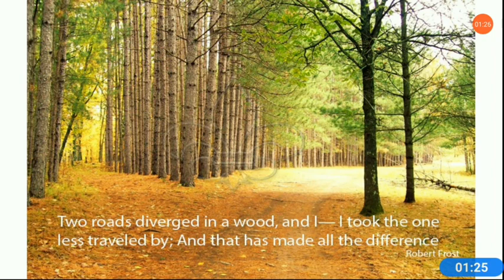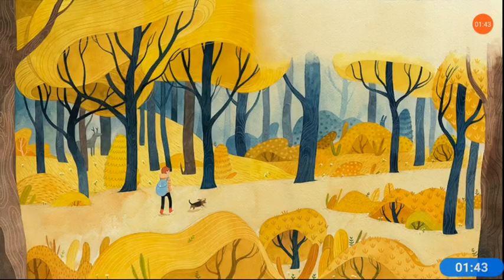Two roads diverged into a yellow wood, And sorry I could not travel both, And be one traveller, long I stood, And looked down one as far as I could, To where it bent in the undergrowth. Then took the other, just as fair, And having perhaps the better claim, Because it was grassy and wanted wear, Though as for that the passing there had worn them really about the same.